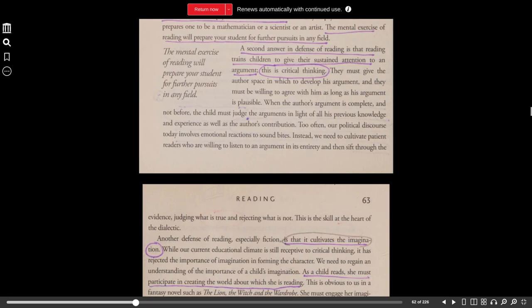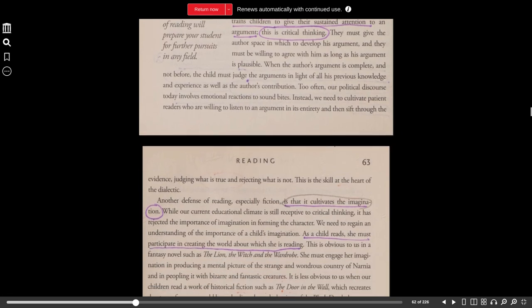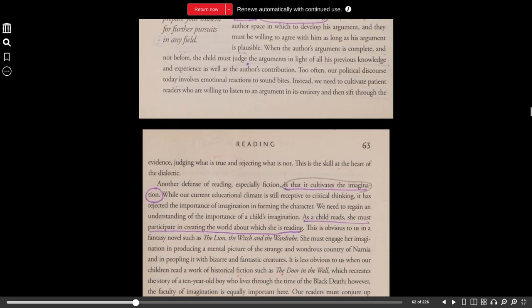A second answer in defense of reading is that reading trains children to give their sustained attention to an argument. This is critical thinking. They must give the author space in which to develop his argument, and they must be willing to agree with him as long as his argument is plausible. When the author's argument is complete, and not before, the child must judge the arguments in light of all his previous knowledge and experience, as well as the author's contribution.